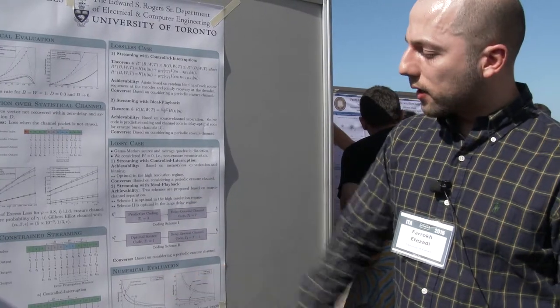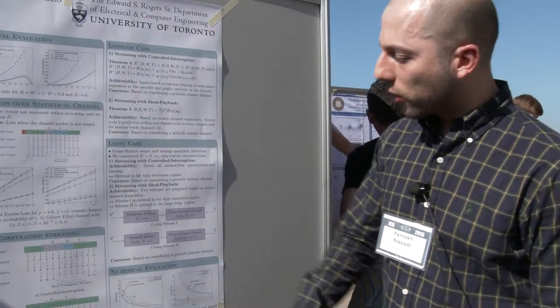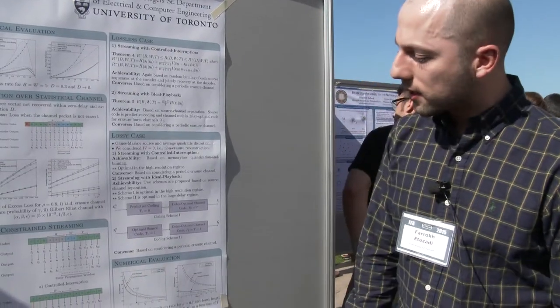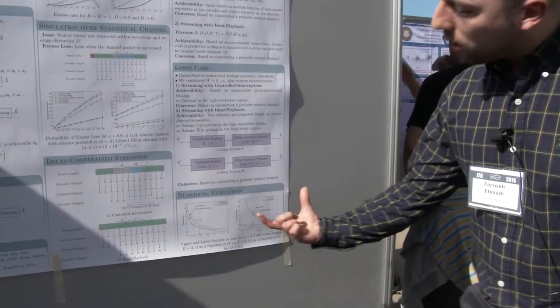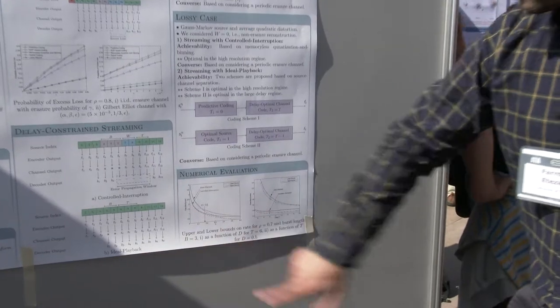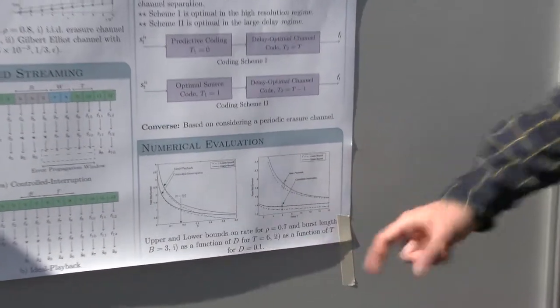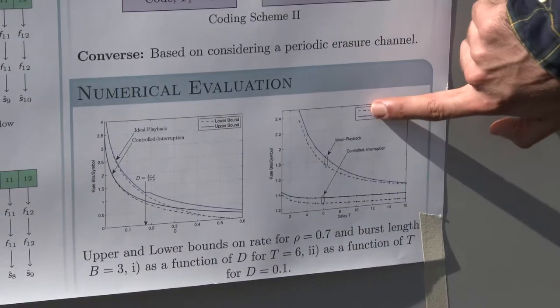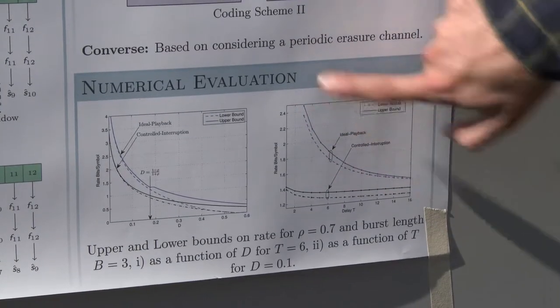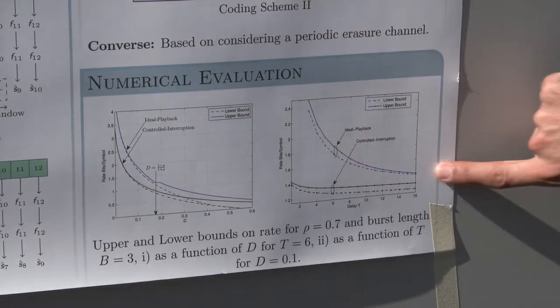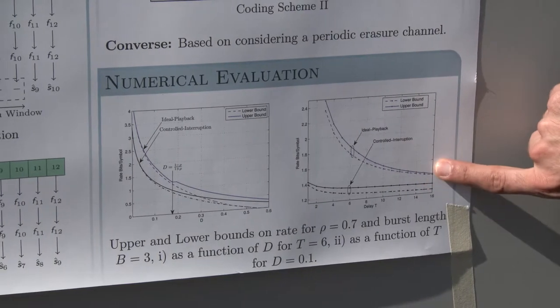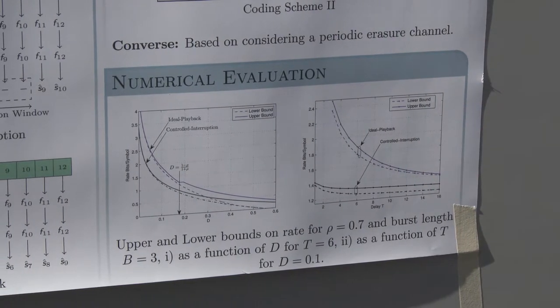Here is some numerical evaluation of rates for ideal playback and controlled interruption cases. For example, this is the rate distortion, and this is the rate as a function of delay. We can see that at delay close to infinity for the ideal playback case, the lower and upper bounds are getting close to each other, which establishes the optimal result as T goes to infinity.